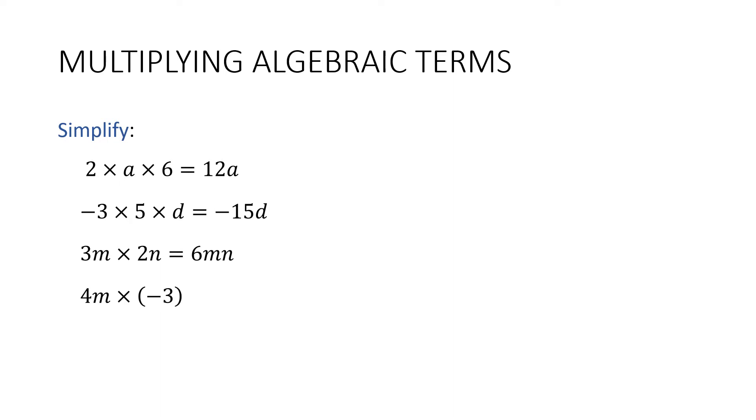Now this one here has got some brackets in it, but they're only being used to group the negative with the 3. So we can do this question. This is a negative multiplied by a positive, which is a negative. Then I'm going to do 3 times 4 is 12, and then I'm going to put the pronumeral on the end.